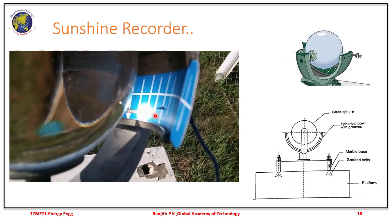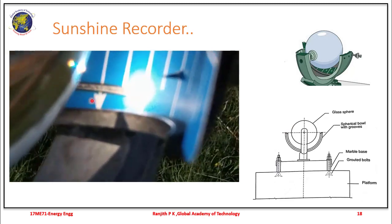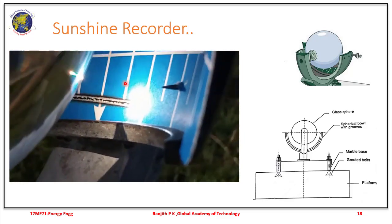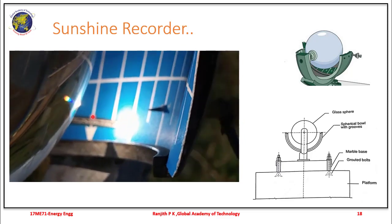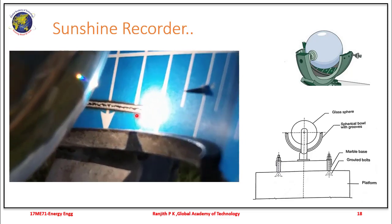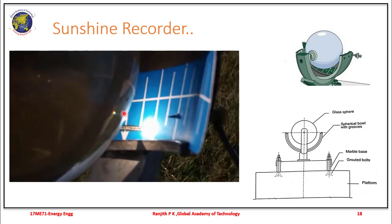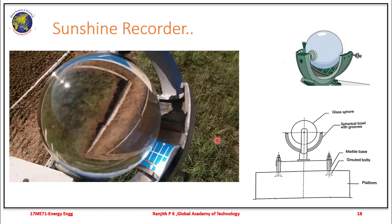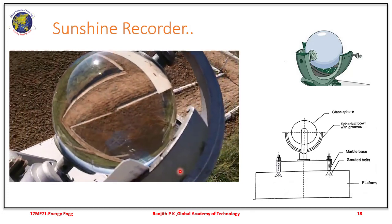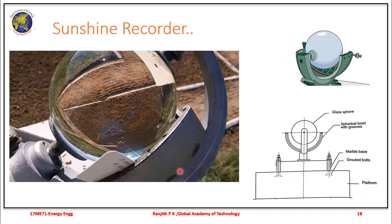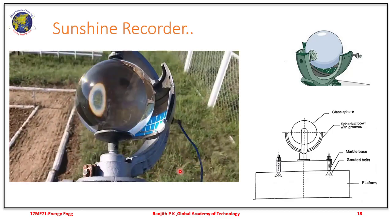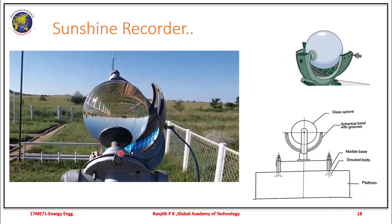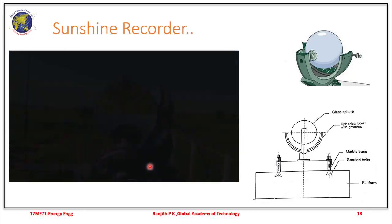You can see the burnt strip that is already burnt due to the sunshine, and this strip continues further — that is how the duration of sunshine is measured.